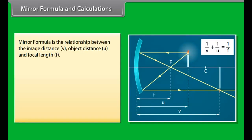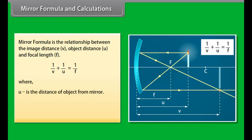Mirror formula is the relationship between image distance V, object distance U, and focal length F: 1/V + 1/U = 1/F, where U is the distance of the object from the mirror, V is the distance of the image from the mirror, and F is the focal length of the mirror.